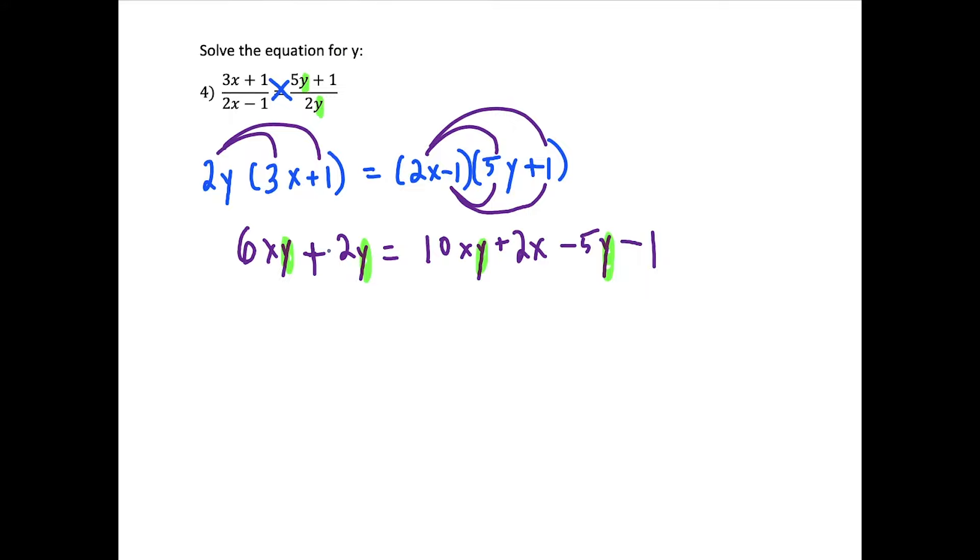So we're going to subtract 10xy on both sides. And in one step, we could also add 5y to both sides. So now the right side will get a little bit simpler. These terms cancel and these terms cancel. But now when we get to the next line, 6 minus 10 is negative 4xy. See, these are like terms, so we just add the coefficients. And then 2y plus 5y is 7y. Once again, these are like terms.